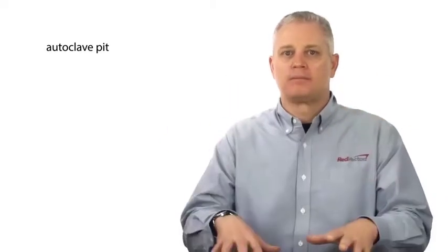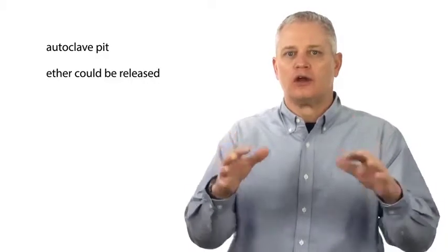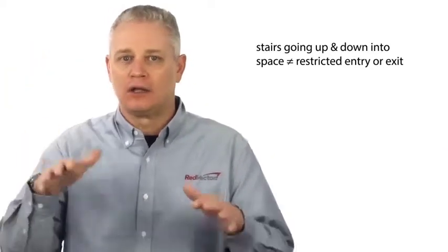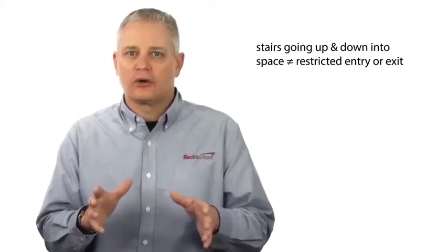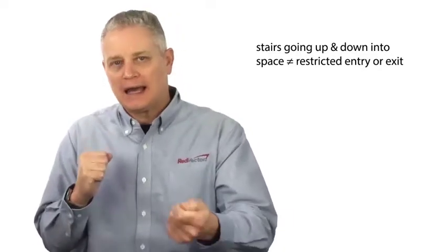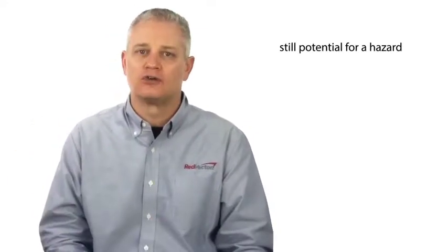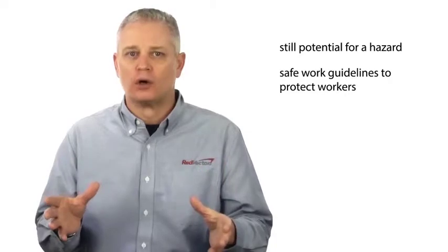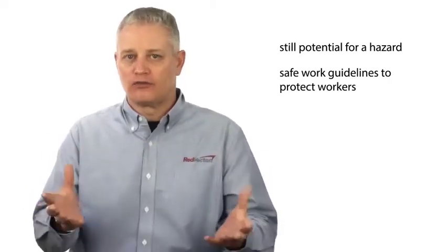Let me give you an example of a space where I used to work that was not considered by OSHA a confined space but there was a potential hazard. We had an autoclave pit where ether could potentially be released from that autoclave that would make it a hazardous atmosphere. However, we had a set of stairs going up and down into that space, so it was not restricted entry or exit. But we still would permit it by doing a gas check before anybody went into that space. It's not technically or legally by OSHA a confined space, but yes there was still the potential for a hazard. So we still had safe work guidelines to protect workers to make sure we didn't have any ether leaking from the autoclave that could be unsafe for employees to breathe.